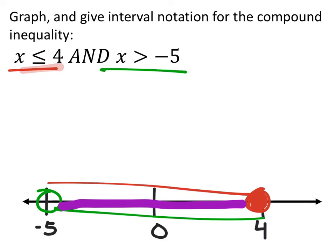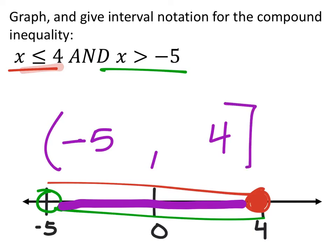And even though the red line goes as far to the left as negative infinity, it stops at negative five because of the 'and' statement. Looking at the purple line — the intersection — it starts at negative five. That's an open circle, meaning it makes the red inequality true but not the green one, so we can't include it. The purple line goes to the right as far as four, which makes both inequalities true, so we include it with a square bracket. That gives us the interval.